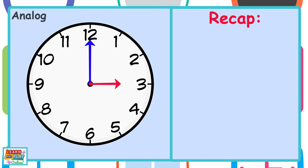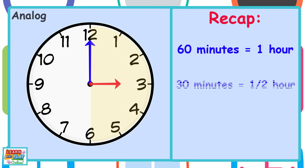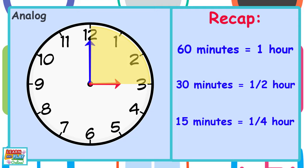Before we continue, let's recap on what we already know. There are 60 minutes in one hour. There are 30 minutes in half an hour. So that means there are 15 minutes in a quarter of an hour.